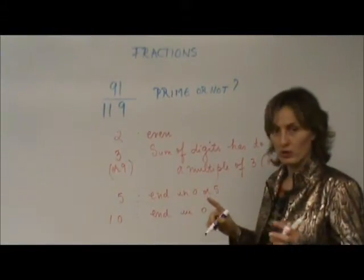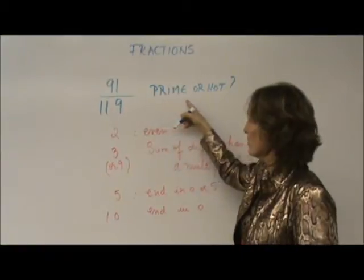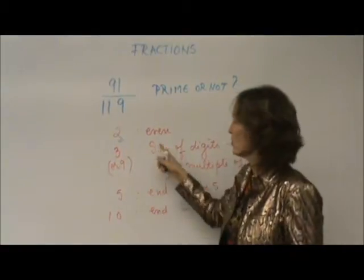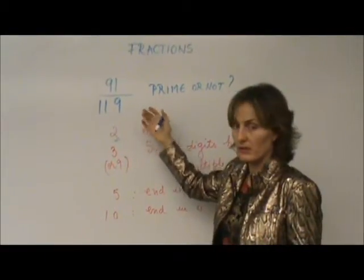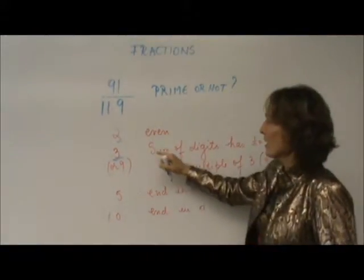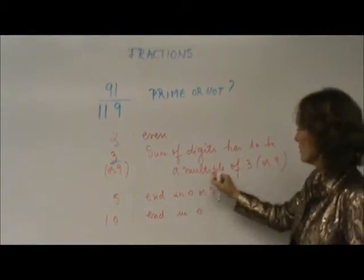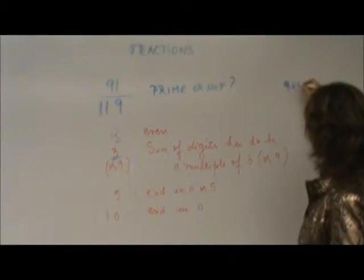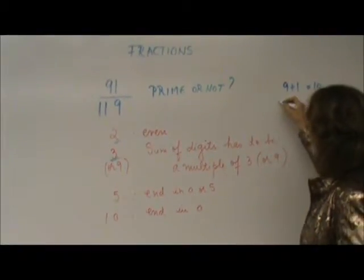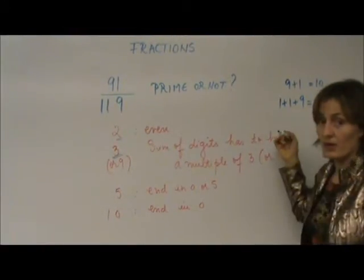Every time you have a fraction, you have to try to reduce it. So, let's see if 91 divided by 119 is a prime number or not. Can it be divided by 2? No, because you should have both of them even. None of them is even. Let's try to see if I can divide them by 3. The sum of the digits of those numbers have to be a multiple of 3. So, if I add 9 plus 1, that would be 10. Can it be divided by 3? Neither by 9. 1 plus 1 plus 9 is 11. Cannot be divided by 3 either.